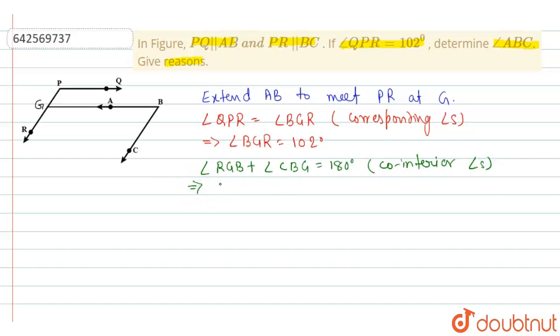Now this gives us angle RGB is 102 degrees plus angle CBG equals 180 degrees, which implies angle CBG is equal to 180 degrees minus 102 degrees, which is equal to 72 degrees.